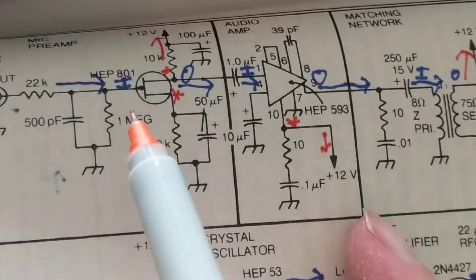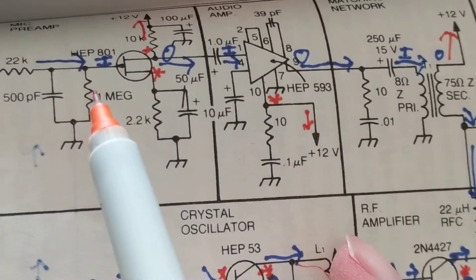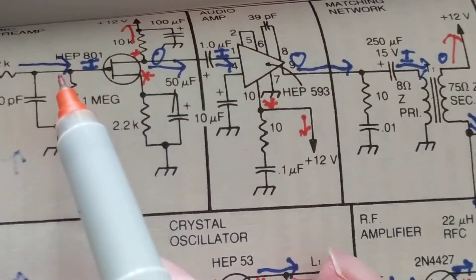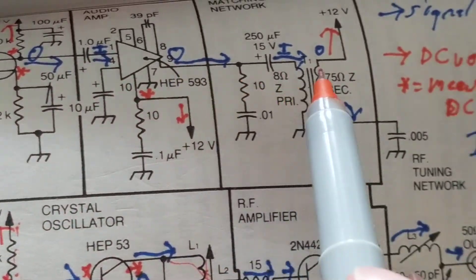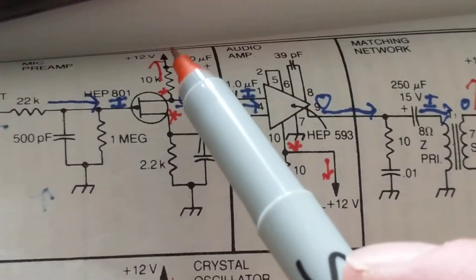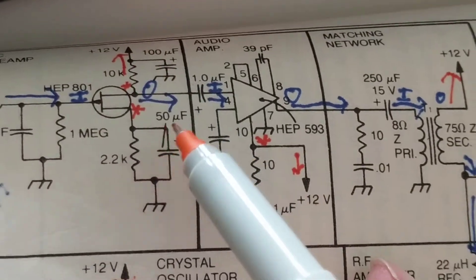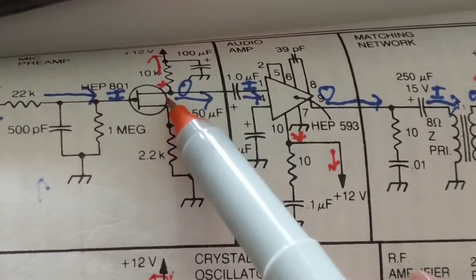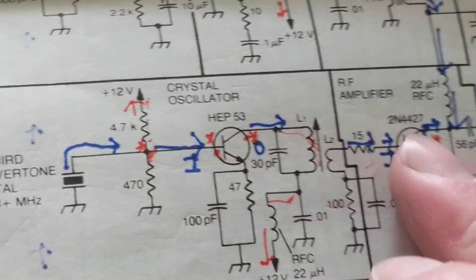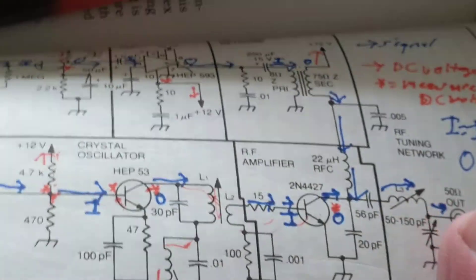So again, to reiterate: input and output, follow the signal path this way. Looking for DC, find where the DC plus is coming from and follow it this way. I hope this was informative. Thanks for watching, see you next time.